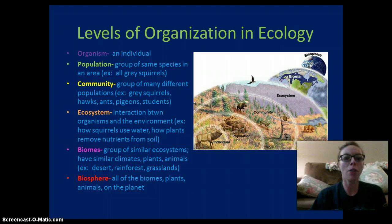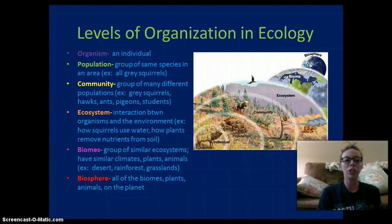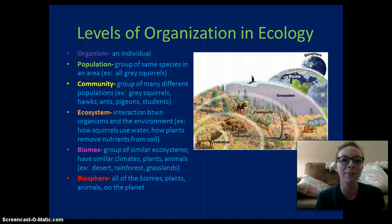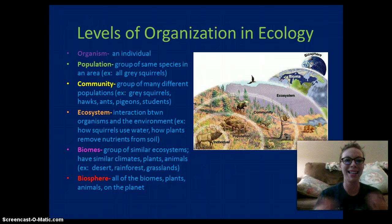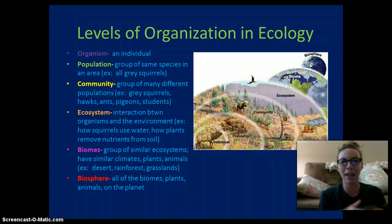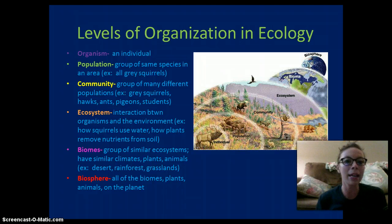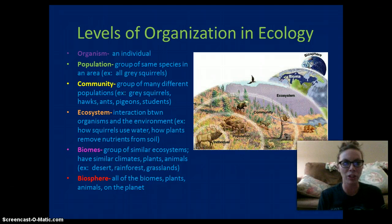The level of organization in ecology starts out with an organism, which is an individual species. A population is going to be a group of the same species in the same area — so that would be all of the squirrels living in this forest. A community is going to be groups of many different populations living in the same area.